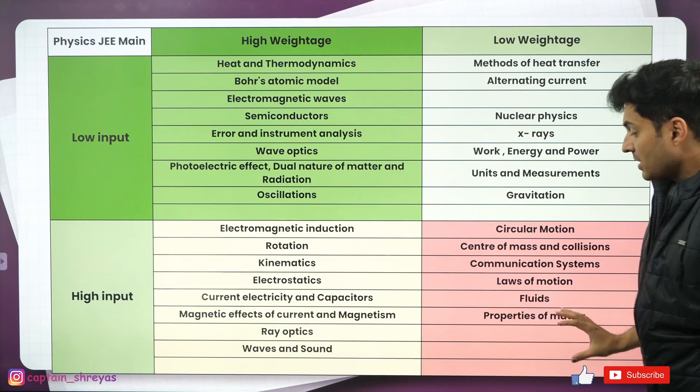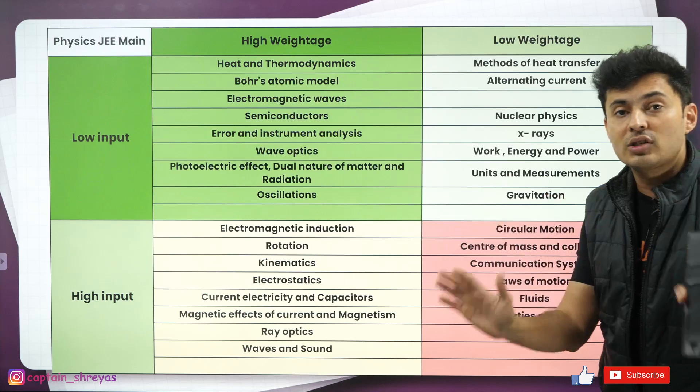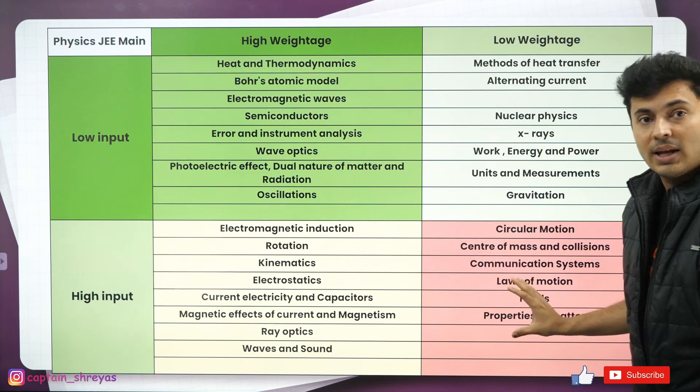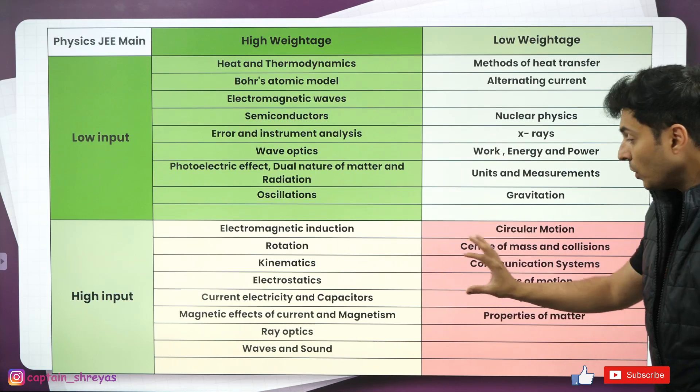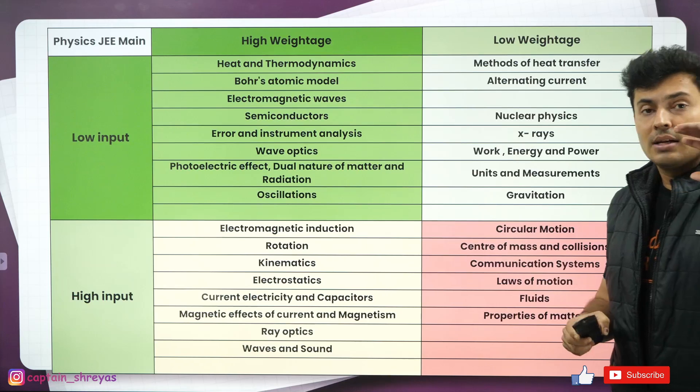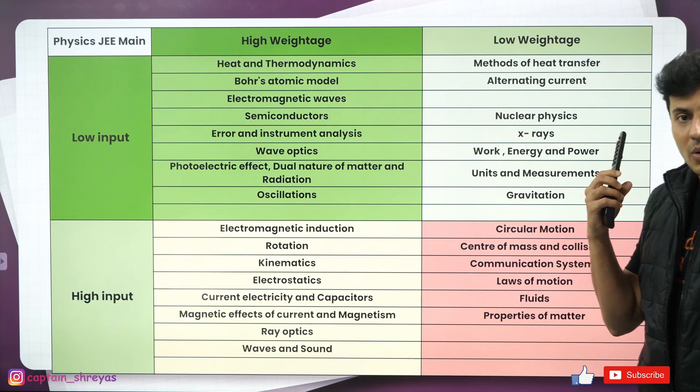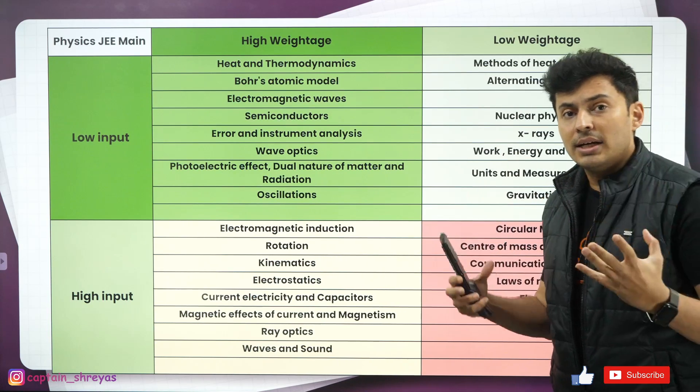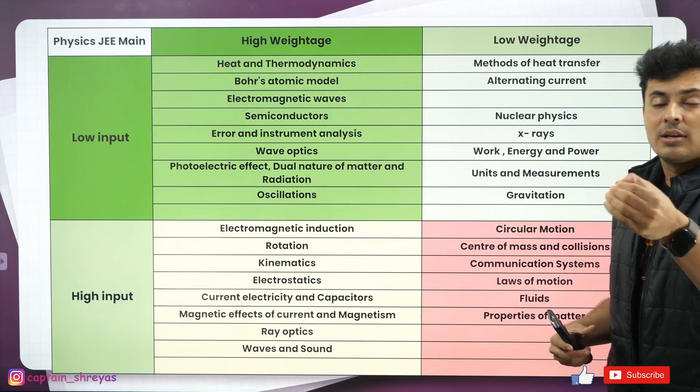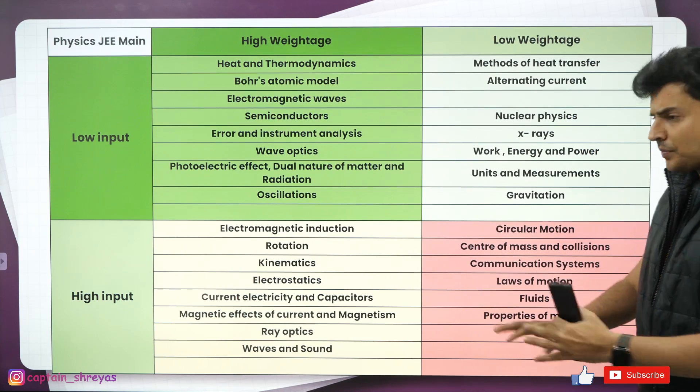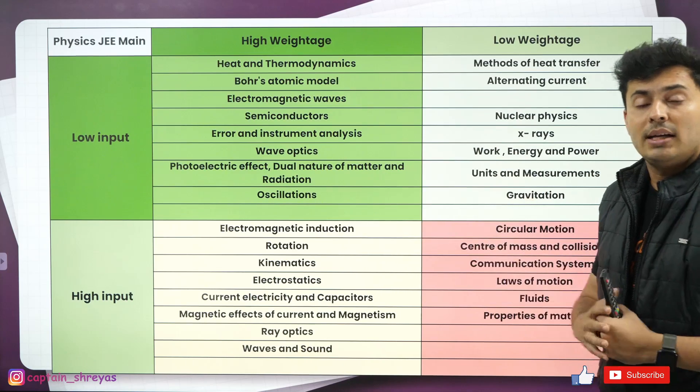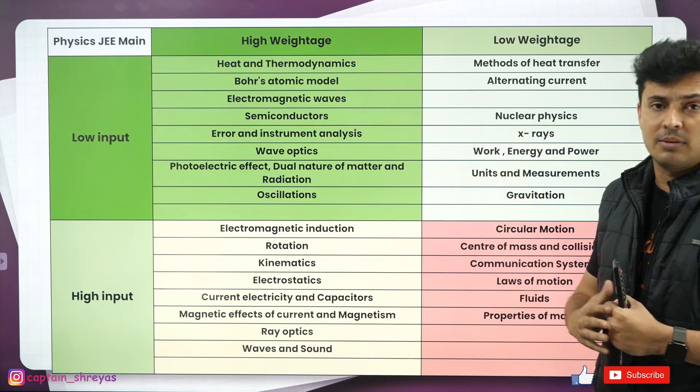These are the topics where you should devote least of your time, because they are not only low weightage but they also consume a lot of time and your effort. So these are the topics that you are going to skip altogether if there is no time at all, or if you have hardly studied too much of the portion, or if you want to selectively choose the topics before your JE Mains examination. It's perfectly fine to skip these topics and still get above 95 percentile or even 97 percentile.